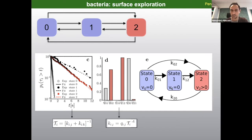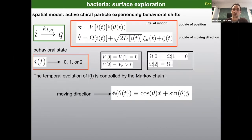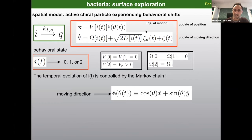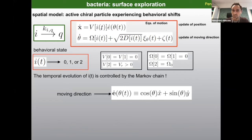Now that we know how to describe the transitions between states for a single bacterium, we want to plug this into an equation of motion. We describe the bacterium as an active chiral particle experiencing behavioral shifts. The equation of motion consists of two equations: one updates the position of the bacterium and the other updates its moving direction. Importantly, these Langevin-type equations depend on the behavioral state — it takes values zero, one, or two — and functions like speed and angular velocity ω depend on which behavioral state it is in.